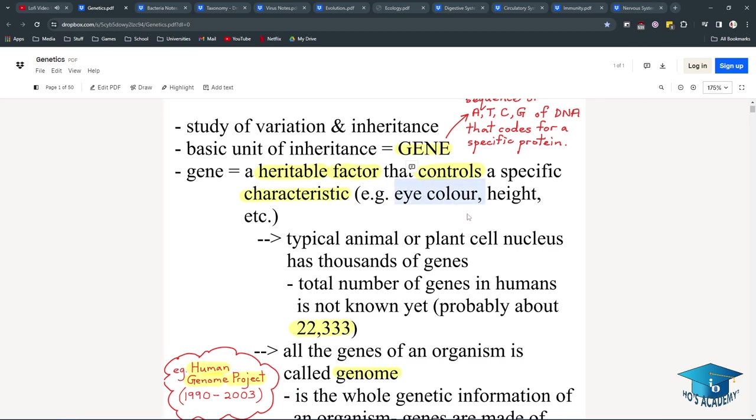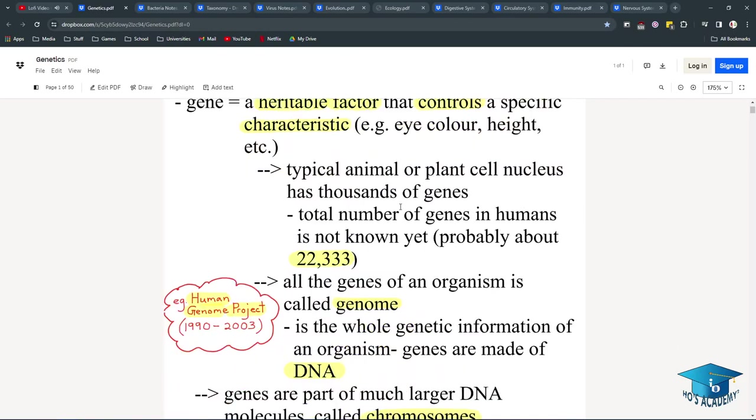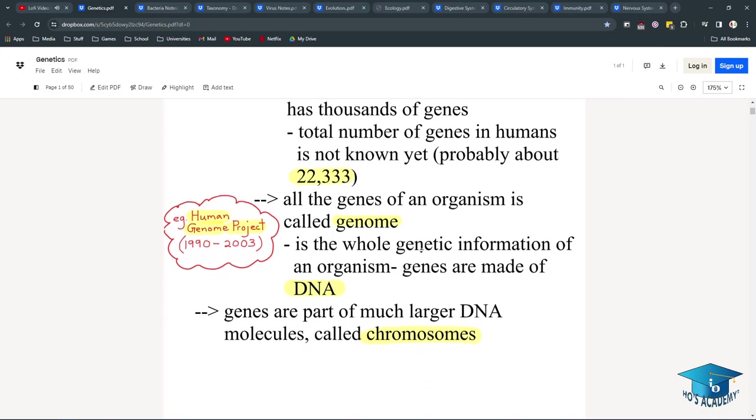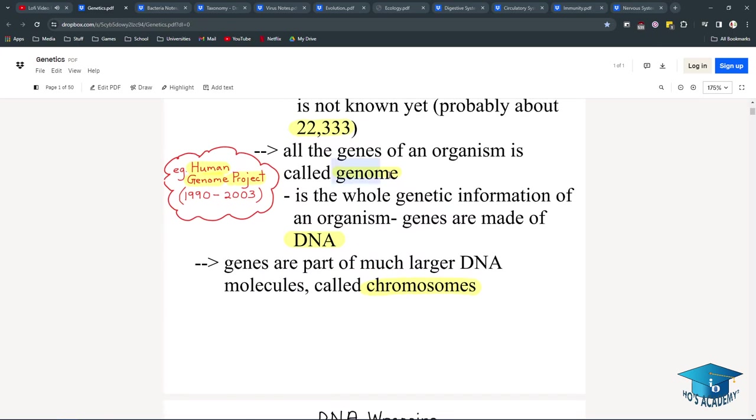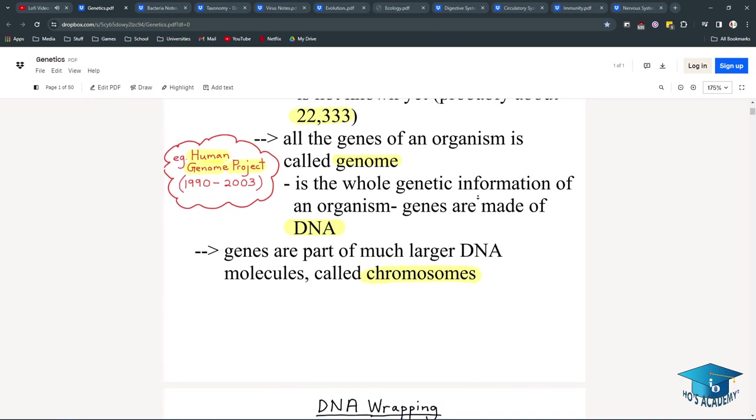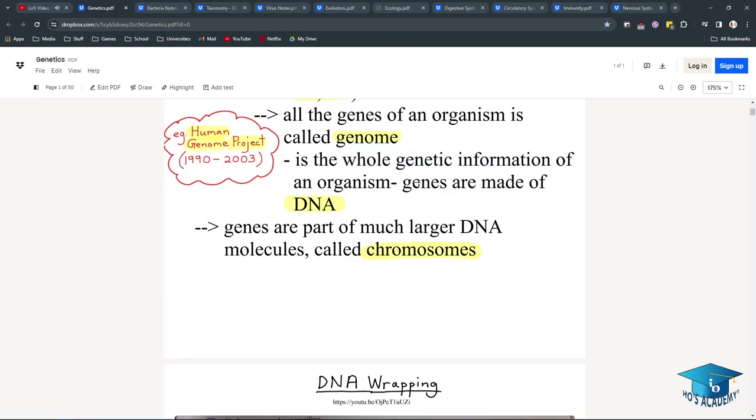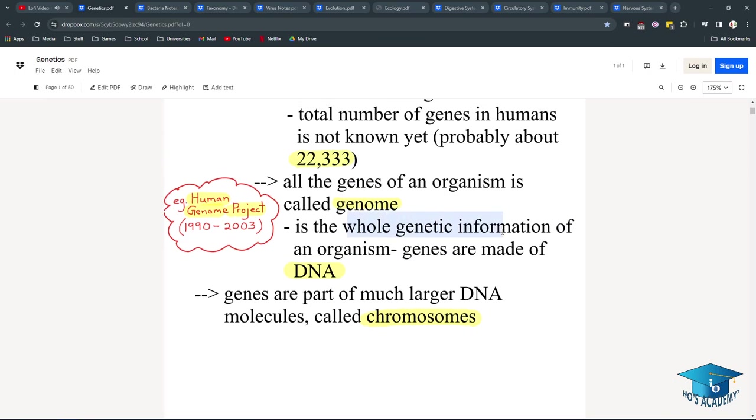While some of these are a little more complex, because some may be polygenic inheritance or linked inheritance. But typically, animal or plant cell nuclei have thousands of genes. Humans have around 22,333. And all the genes of an organism is called a genome, the collective. Such as the Human Genome Project, which was mapped out up until recently. This genome will contain literally every piece of genetic information about you, because your genes are made up of DNA.